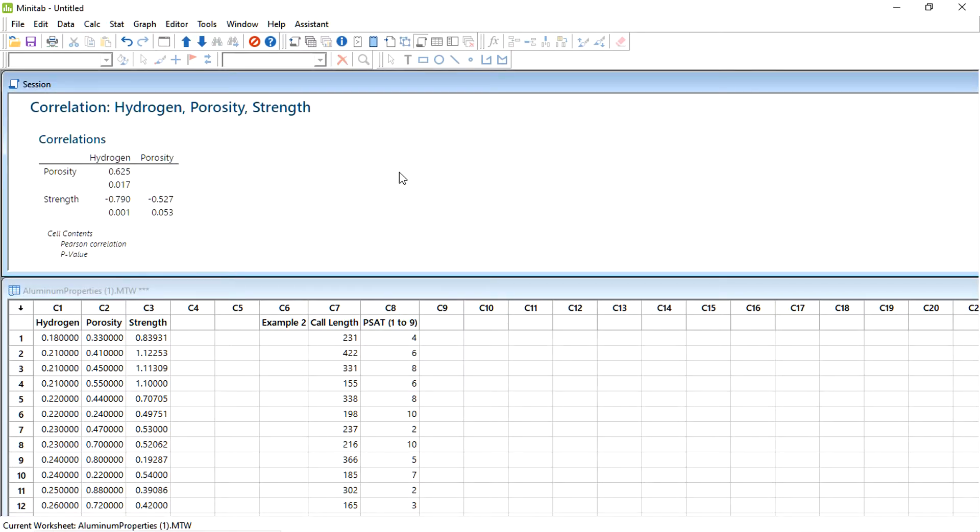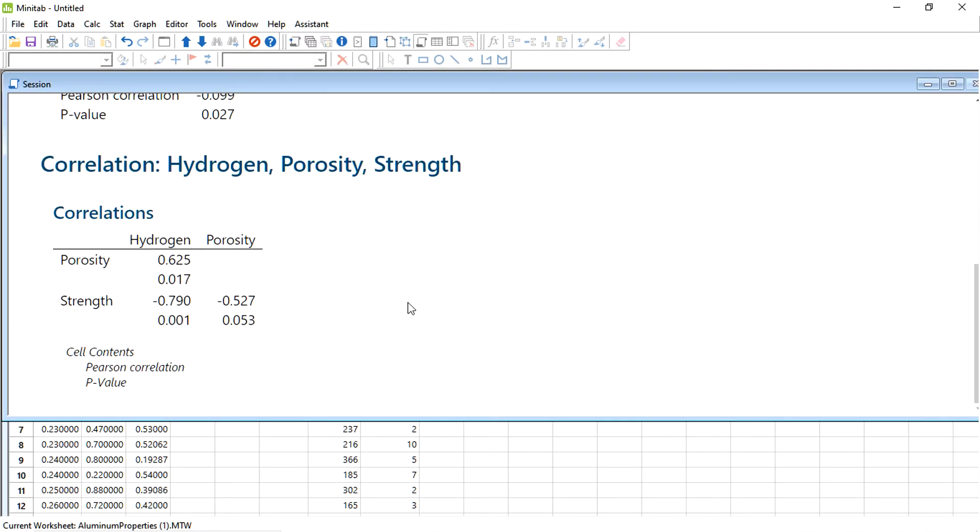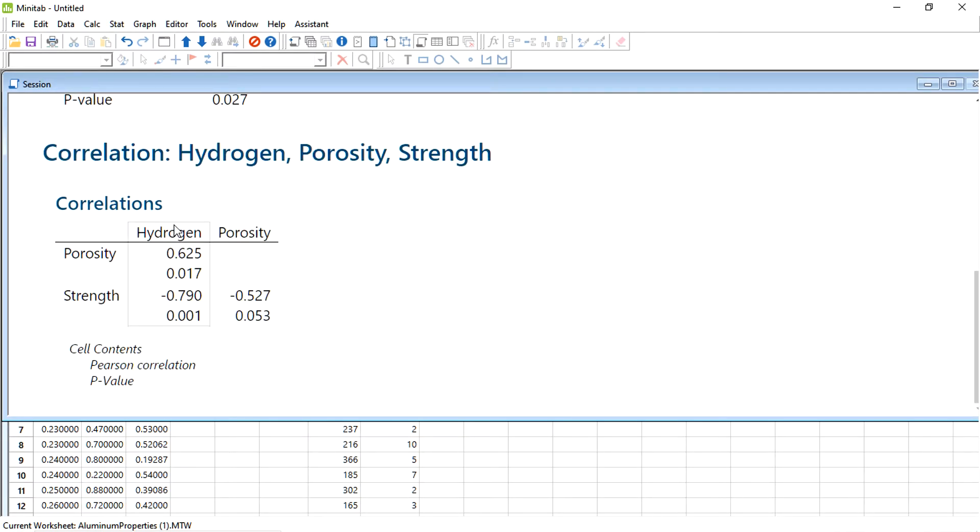This gives you the relation between all three. You can see here the correlation between hydrogen and porosity shows 0.625, but the p-value is very less, the p-value is not greater than 0.05. So we cannot reject the null hypothesis here, and we cannot say that these variables have correlation. They do not have any correlation as per this data.